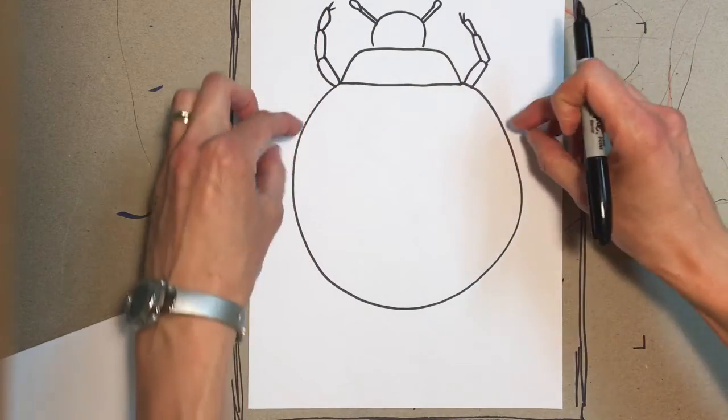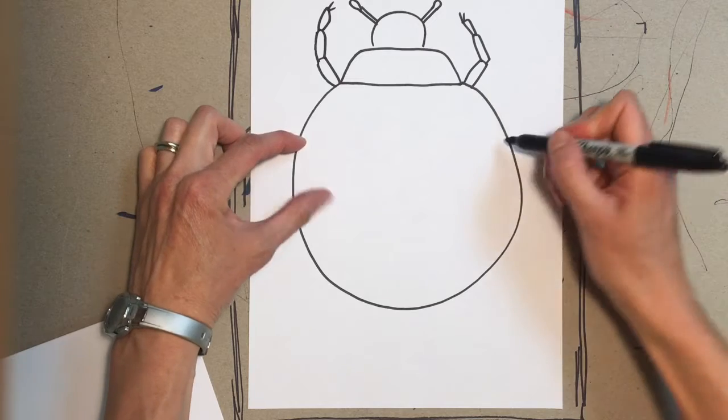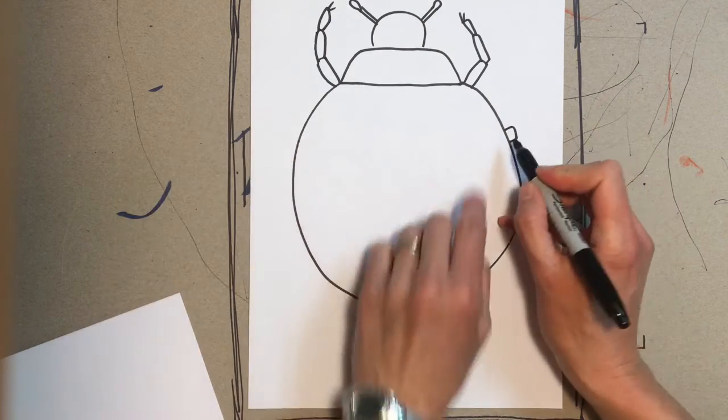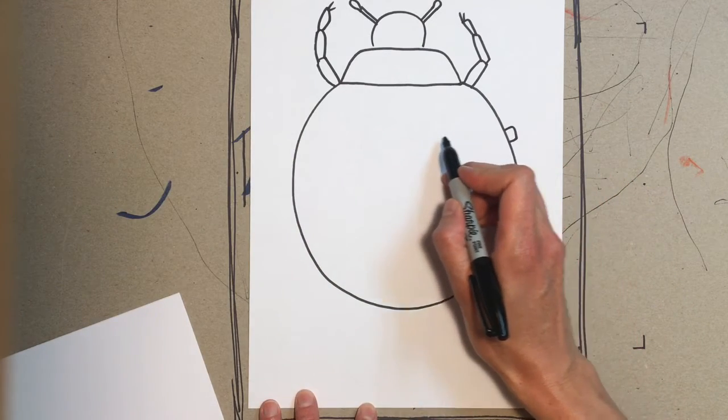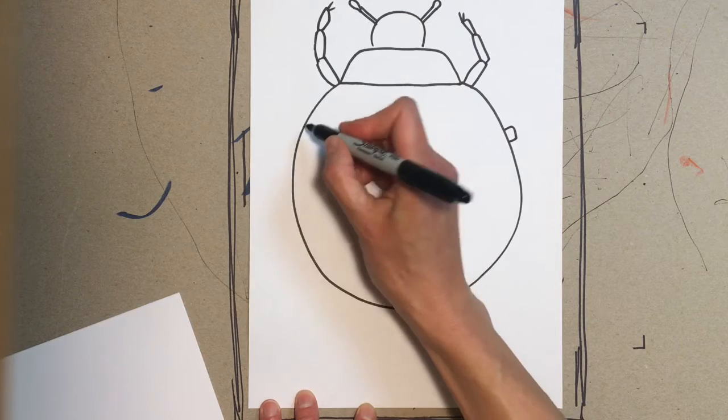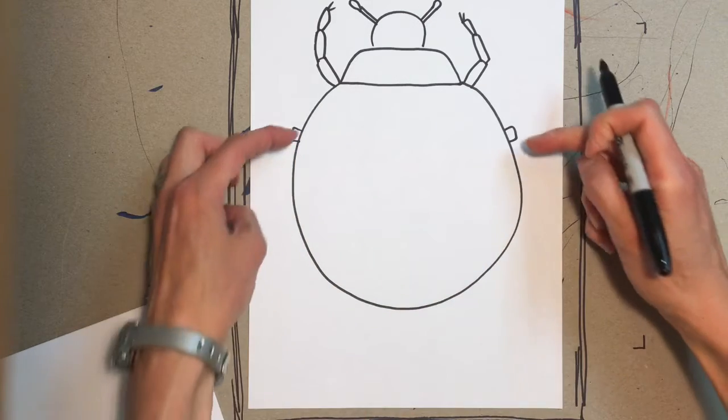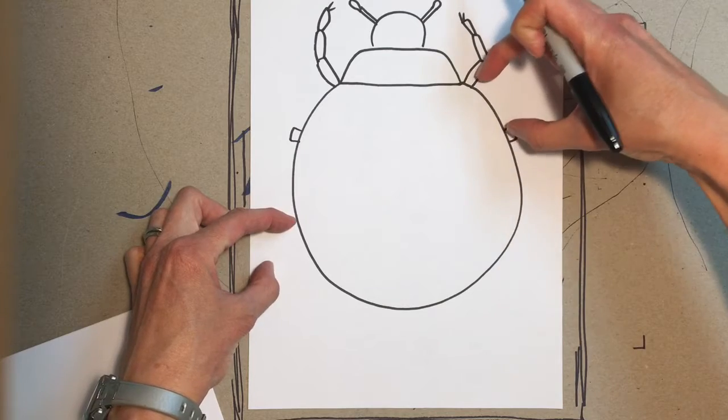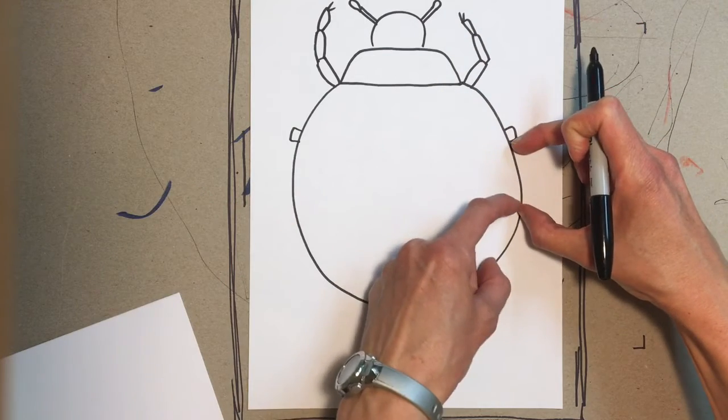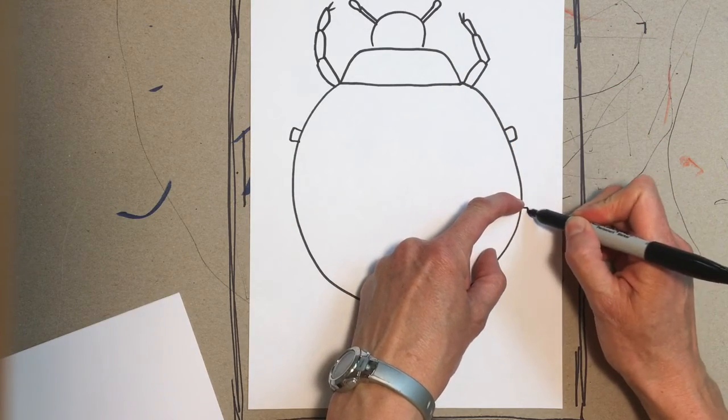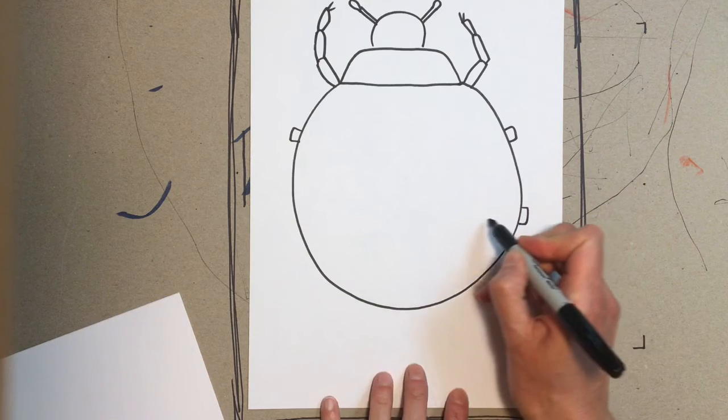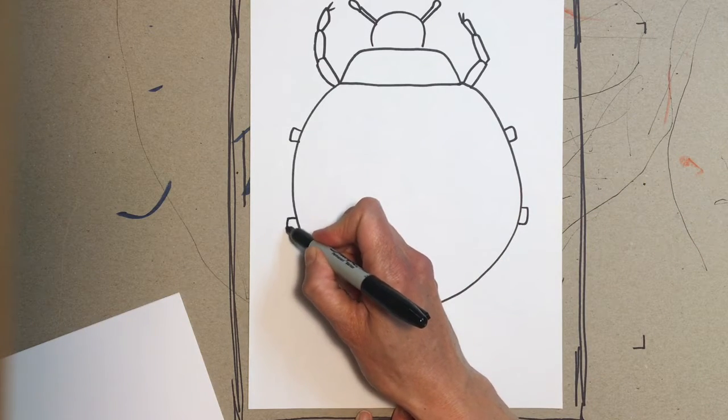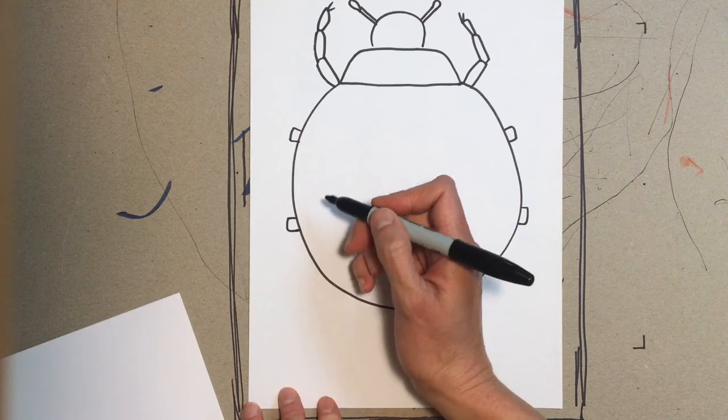Now I like to hold my marker above my paper and just kind of trace across to see where it's gonna go so it's nice and even. I'm gonna scoot down about this much, I'm gonna scoot that about that far down right there and draw the next set of legs. And they're symmetrical so they're in the same spot on each side so that they match.